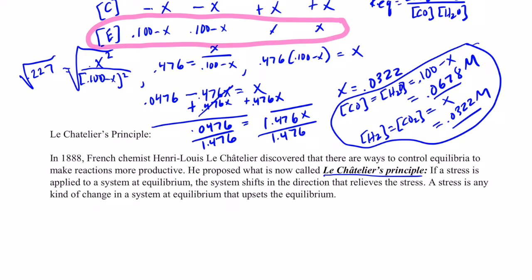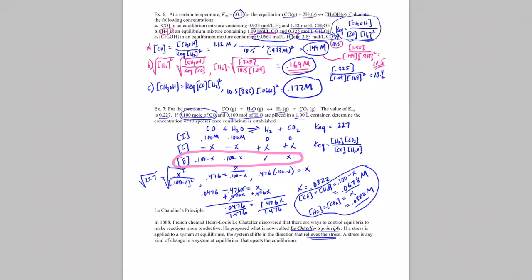if a stress is applied to a system at equilibrium, the system will shift in a direction that will relieve the stress. Now, a stress is any kind of change in a system at equilibrium that can upset that equilibrium.